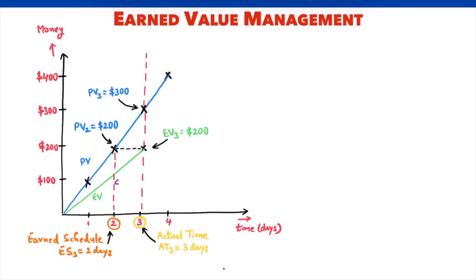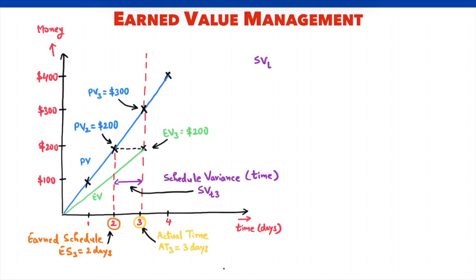We should have completed $200 worth of work in 2 days, but we have taken 3 days. The gap between earned schedule and actual time is the schedule variance — schedule variance based on time. This is different from the dollar-based schedule variance in the traditional EVM approach. SV(t) at the end of day 3 equals earned schedule minus actual time. Earned schedule is 2 days, actual time is 3 days, so schedule variance is minus 1 day.